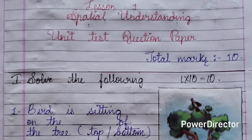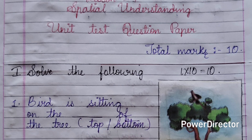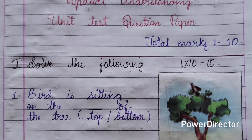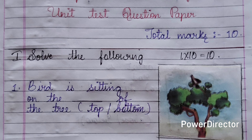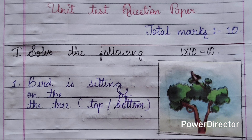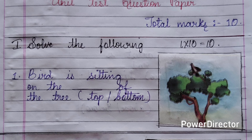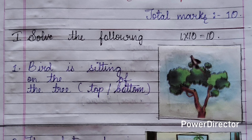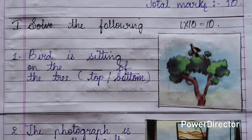The total marks is for 10 marks, and each question carries one mark. There are 10 questions in total, so 10 marks for this paper. All the questions are picture-based questions — you need to see the pictures and answer the question given.